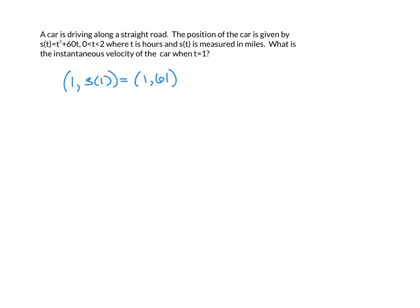But our other point is going to need to be a variable. So we'll say that the point occurs at, let's say, x, and then the y variable is s of x. Or we can write it as x, x squared plus 60x. And this could be for any value of x other than x equaling 1.